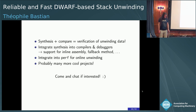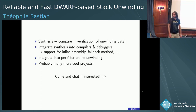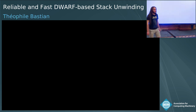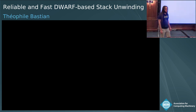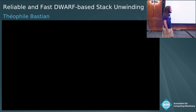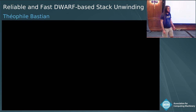I'll be happy to take questions now and chat afterwards. [Q&A] Really cool. I have experience working with EH frames. There is a special section, EH frame HDR, to speed up the search of EH frames. Did you measure your unwinding speedup with and without this section? I did not do that actually, but I'm pretty sure that libunwind takes that into account, so I most probably benched against the fastest version available. But I didn't try without the HDR, you're right.